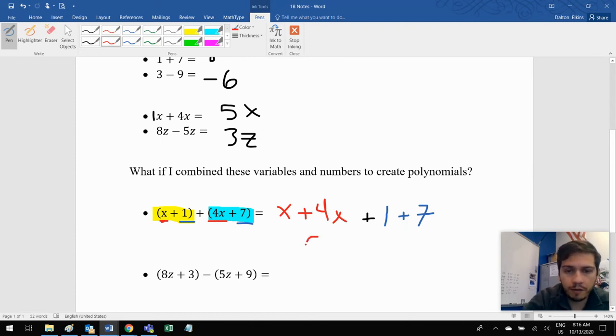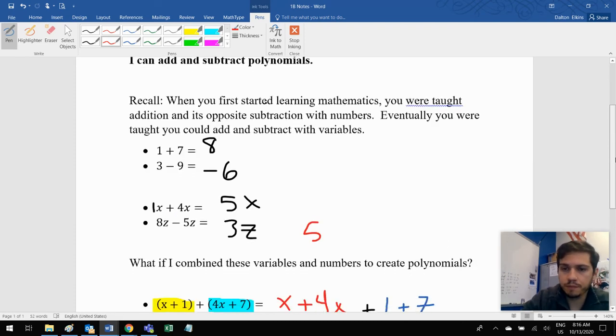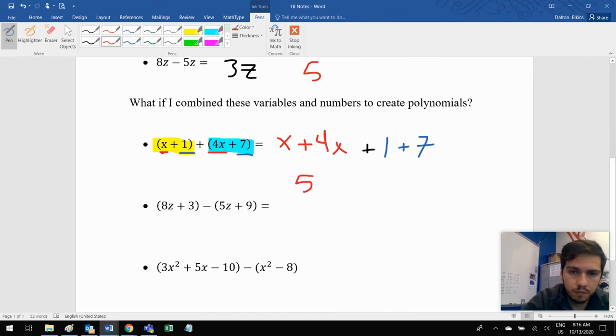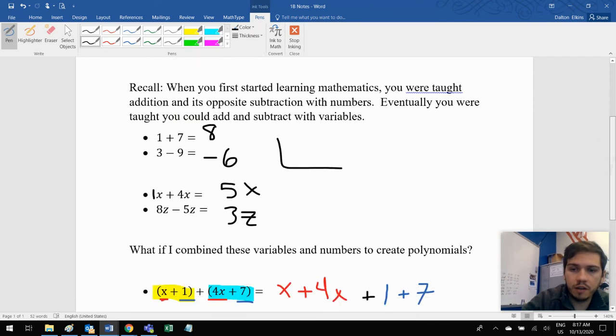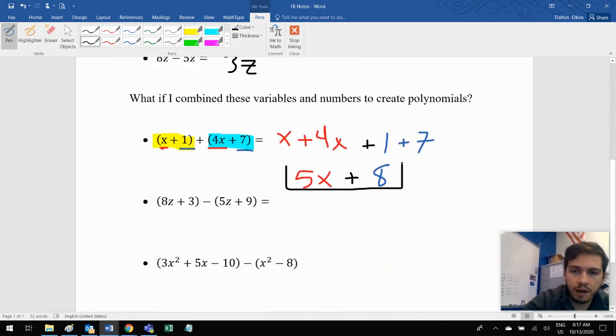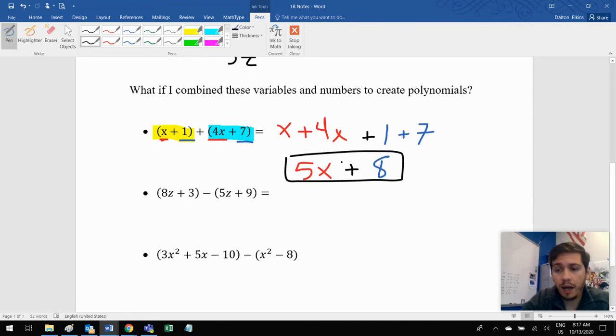X plus four X is five X. And then one plus seven, this is something that we did up there, is eight. Now we can't actually combine these any further. This is as far as we can get with the problem. Just five X plus eight. We can't combine a variable term with a non variable term. Those are not like terms. We have to leave them as they are here.